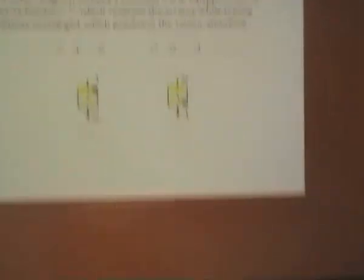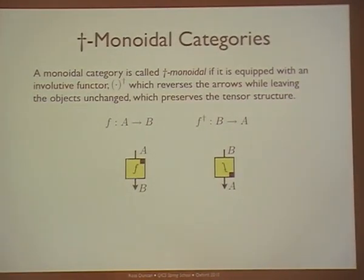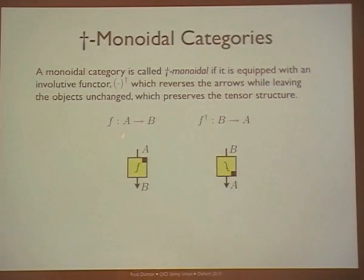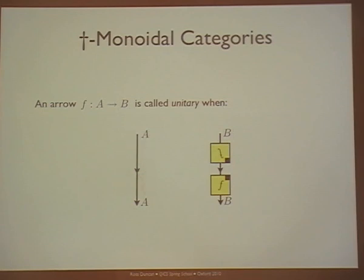I'm now going to add a little more structure: the dagger monoidal structure. When I say dagger, I have a functor — a map on arrows — so for every arrow f from A to B, I have another arrow f† from B to A, denoted by turning f upside down. If I have this dagger, which you should think of as the usual adjoint on vector spaces, I can use it to define unitarity — that is, whenever f is composed with f†, or f† with f, you should just get the identity.